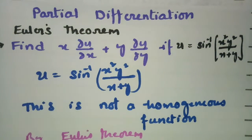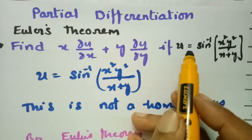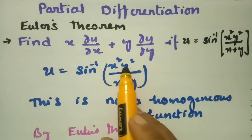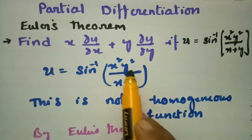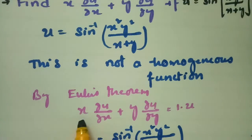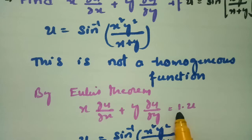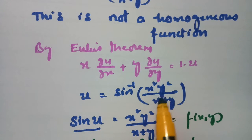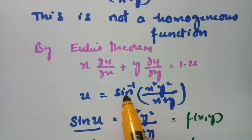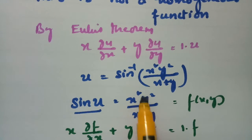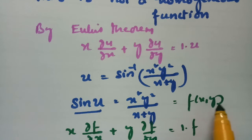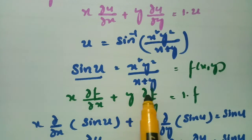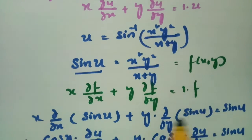To summarize: given u = sine inverse of (x²y²)/(x+y), since this is not a homogeneous function, we let f = sine u = x²y²/(x+y), which is homogeneous of degree 1. By Euler's theorem, x·∂f/∂x + y·∂f/∂y = 1·f = sine u.